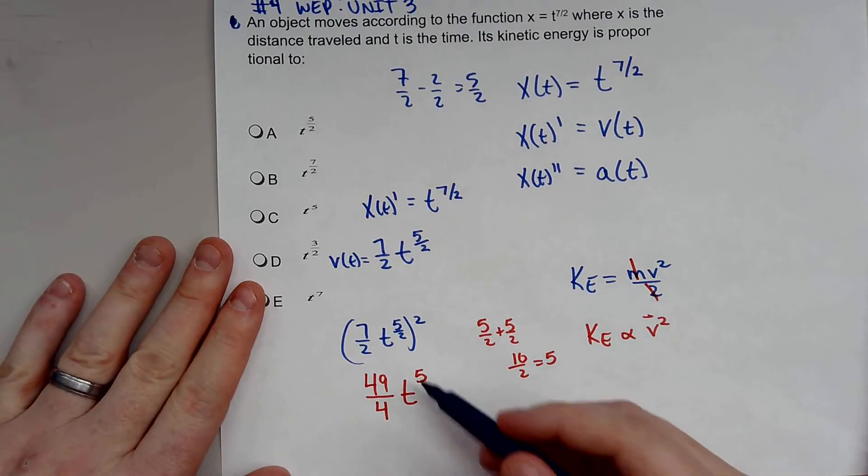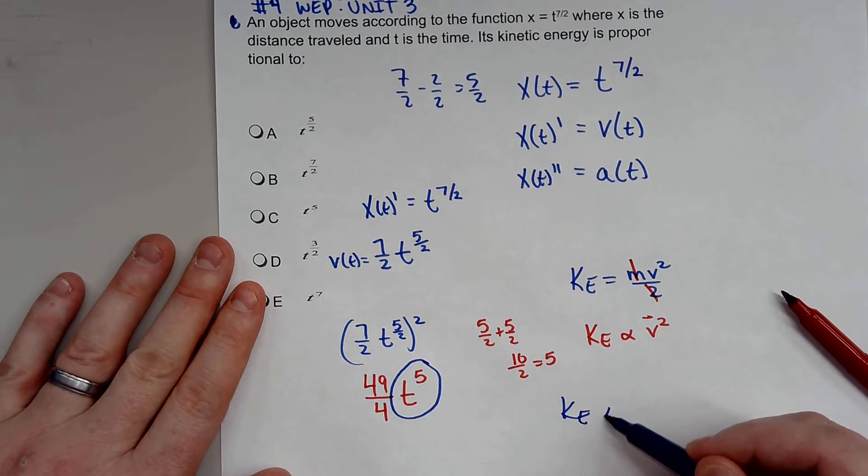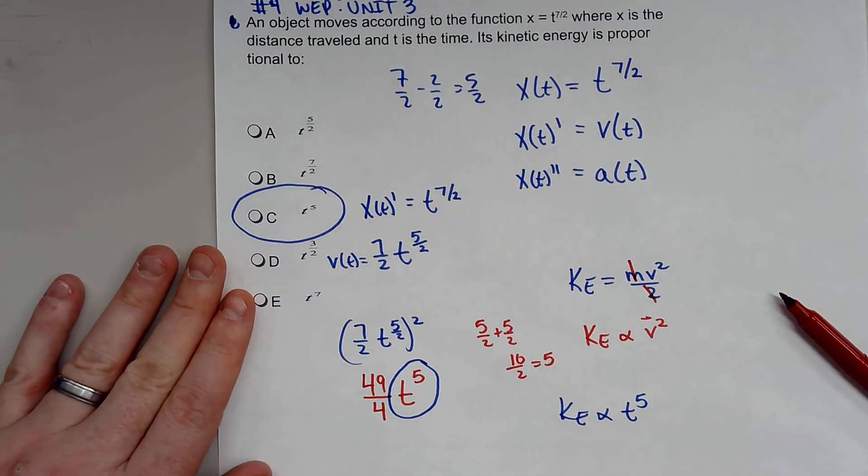So if we're actually looking at this, it's acting with respect to t. That means our kinetic energy is proportional to t^5. And it is right here, t to the 5th power.